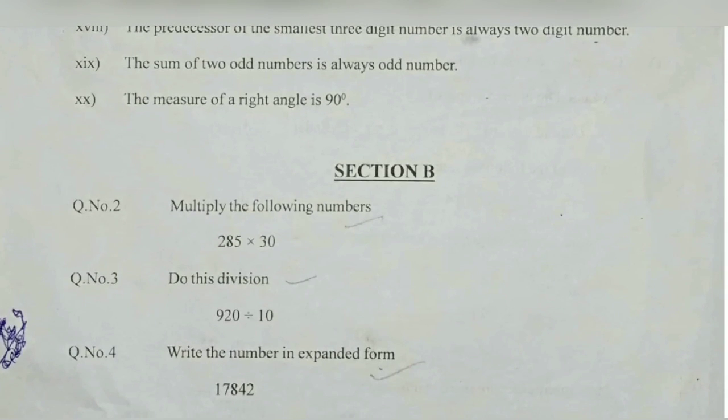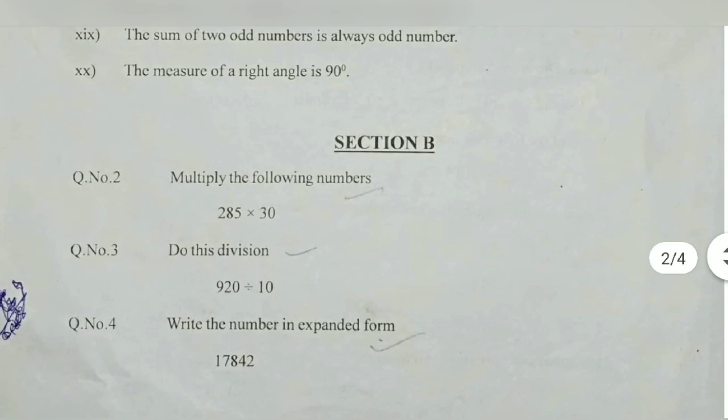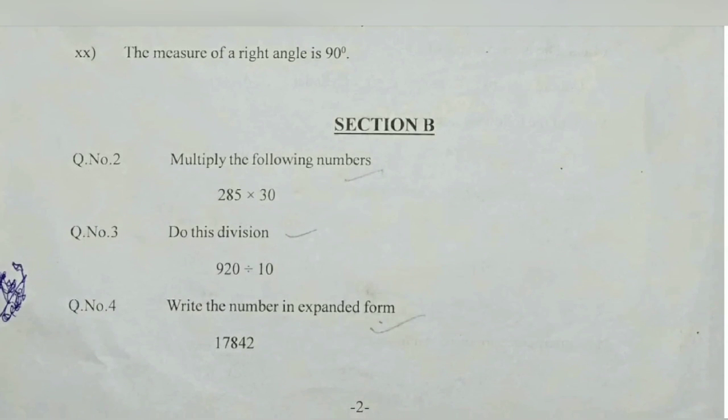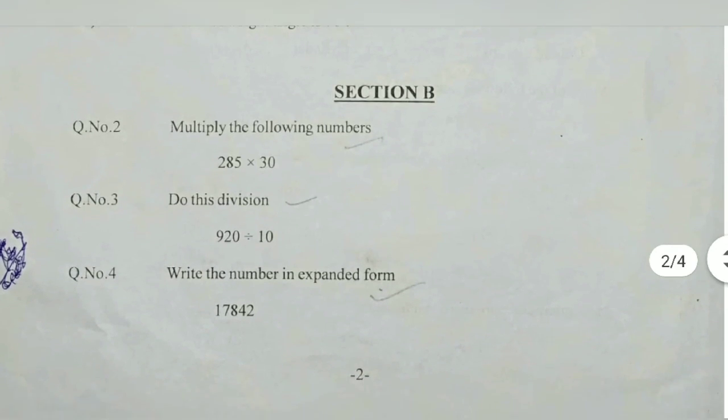Write the number in expanded form. 17,842 is 10,000 plus 7,000 plus 800 plus 40 plus 2. Two different types questions will ask - the opposite answer will ask, then we want to write the expanded form, and after we want to write the number.